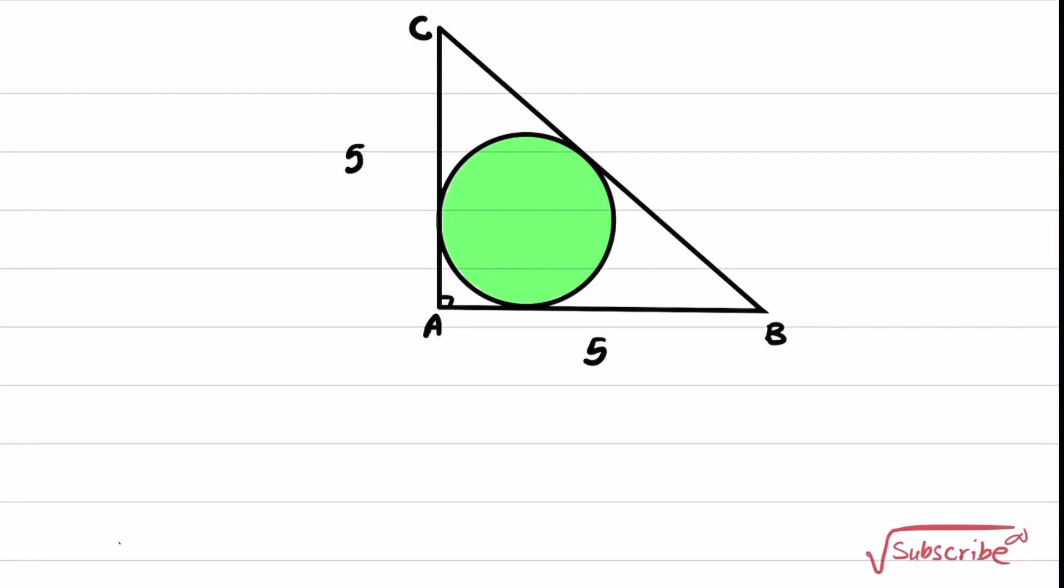Welcome to a new episode of Mathedartic. In this question, triangle ABC is a right triangle and the sides are given as 5. The question asks for the area of the circle, which is an in-circle inside this triangle.